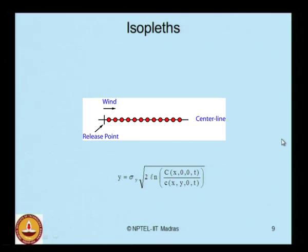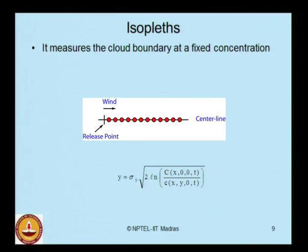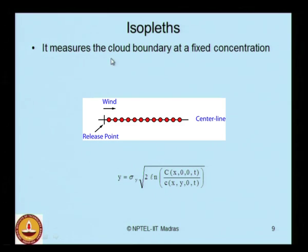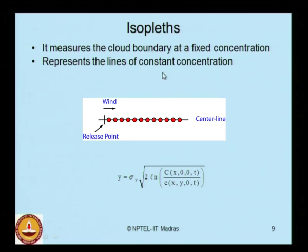In the literature, there is terminology called isopleths. Isopleths measure the cloud boundary of any fixed concentration. For any gas or vapor release at a fixed concentration dispersed in the atmosphere, the cloud boundary of this dispersion is explained by the term isopleth. This represents the line of constant concentration, used to demarcate the boundary of the vapor cloud — 'iso' stands for constant or fixed concentration.